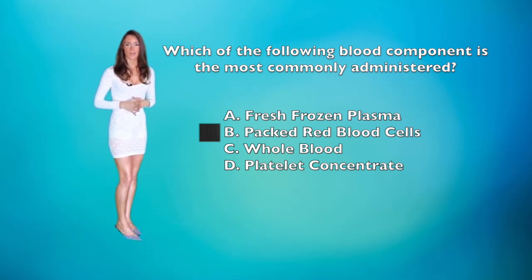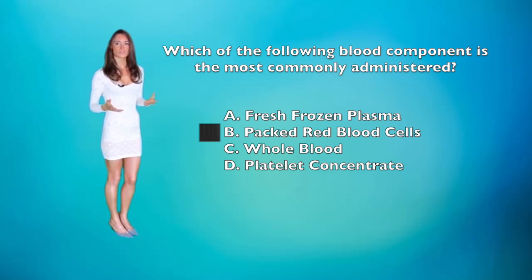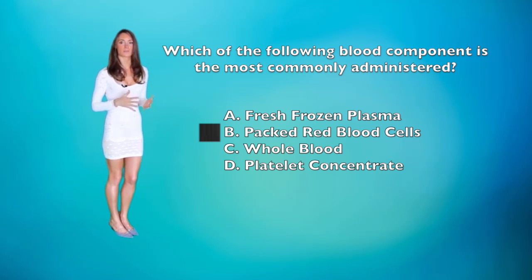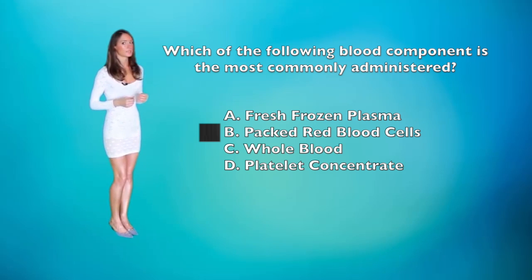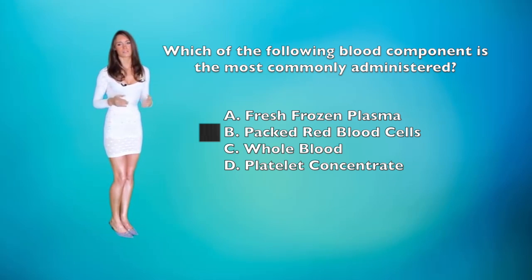Regarding the other options: Fresh frozen plasma could also be administered if indicated, however the first choice for fluid replacement in a critical condition is packed red blood cells. Whole blood transfusions are rarely done — instead you give only the components the patient needs, such as red blood cells. Platelet concentration is not appropriate here, as a large number of platelets can cause clots, potentially causing serious harm to a patient who already has insufficient fluid volume.